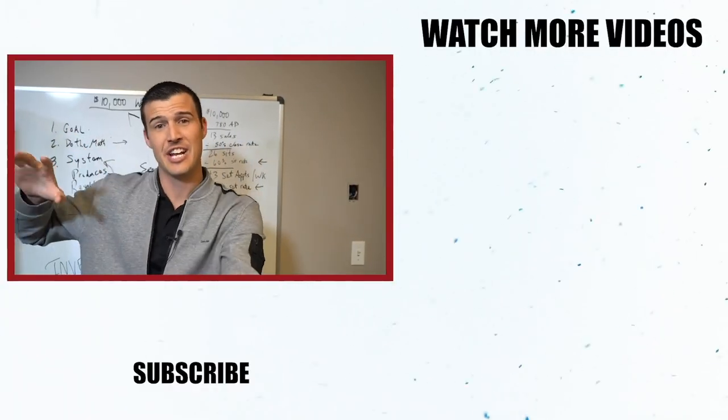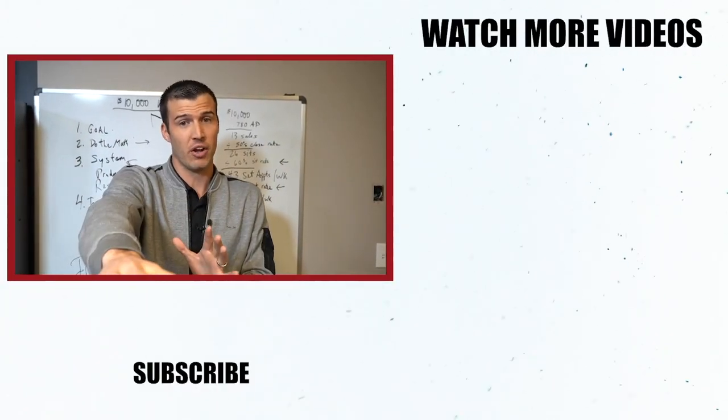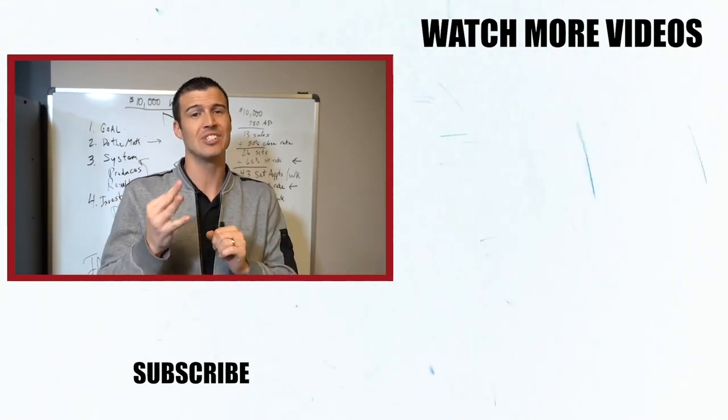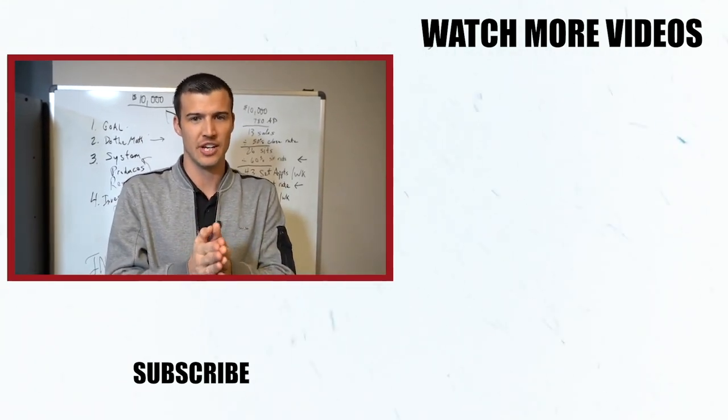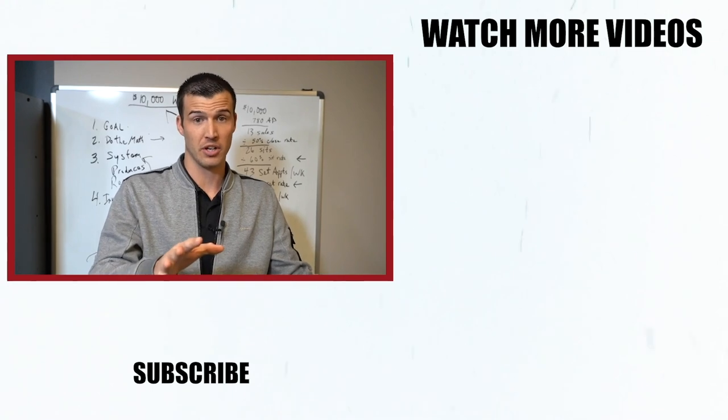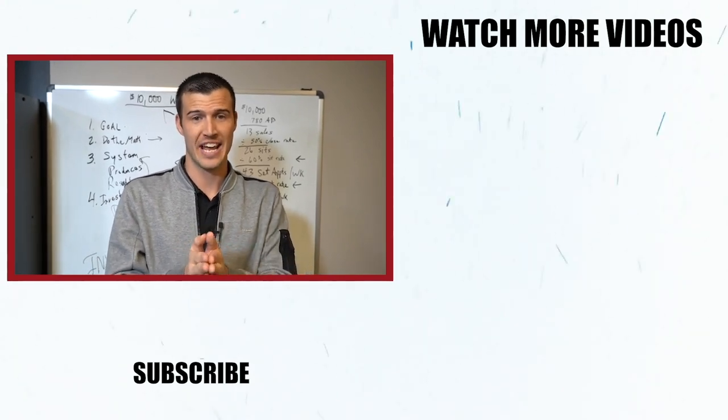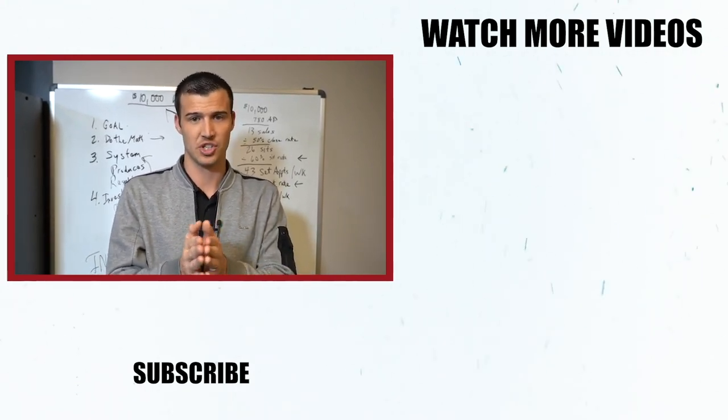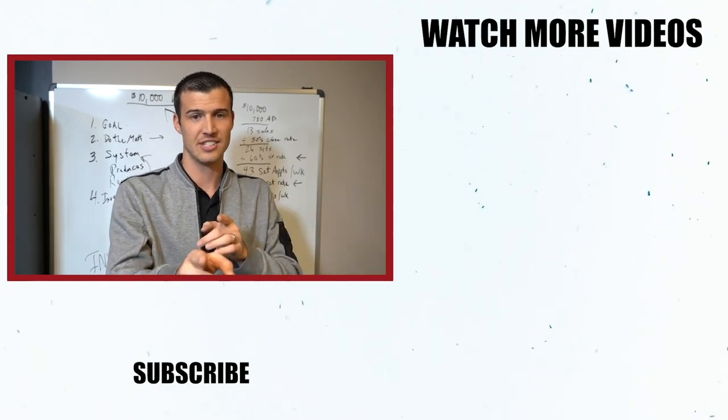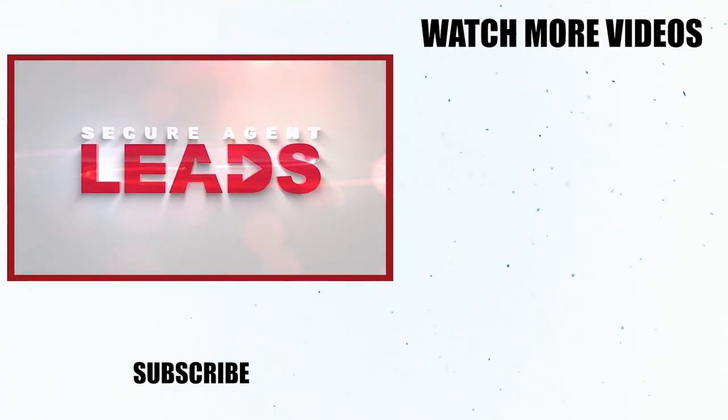Hey, if you love this video, which obviously you did, I got two right here that you're going to want to check out. The first one's three simple steps to close an insurance sale. The second one is how to make $100,000 selling property and casualty insurance. Click on one of those, and I'll see you there.